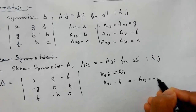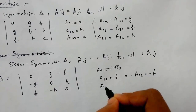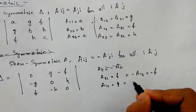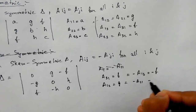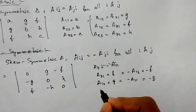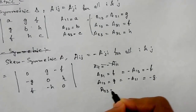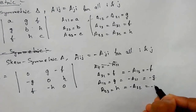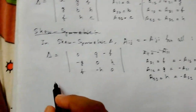Similarly, a12 equals g, which equals minus a21, which equals minus g. And a23 equals h, which equals minus a32, which equals minus h.